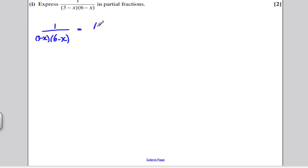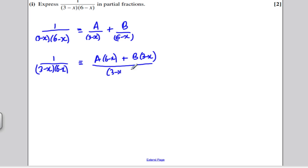So their partial fractions are A, some number A over the first distinct factor, plus some number B over the second distinct factor. And these two statements would be identical to each other. Okay, multiplying to make common denominators on this side, I would then get that 1 over (3-x)(6-x) would be identical to A(6-x) plus B(3-x), all divided by (3-x)(6-x).